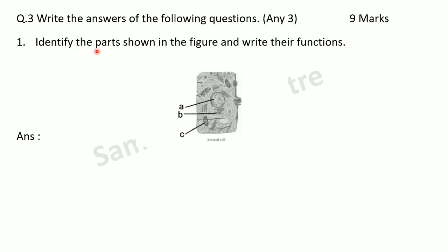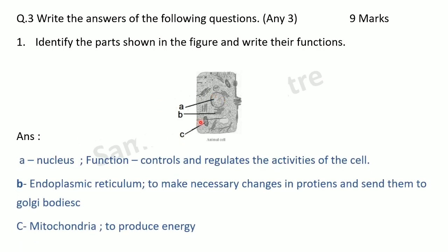First: identify the parts shown in the figure and write their functions. An animal cell diagram is given with parts A, B, and C. A is the nucleus — its function is to control and regulate the activities of the cell. B is the endoplasmic reticulum — its function is to make necessary changes in proteins and send them to the Golgi bodies. C is the mitochondria — it is the powerhouse of the cell, and its function is to produce energy.